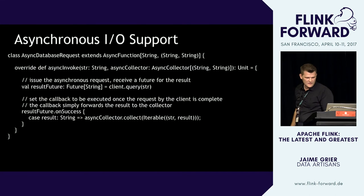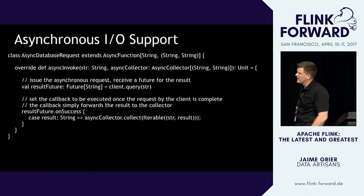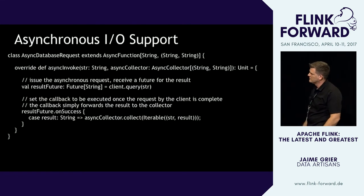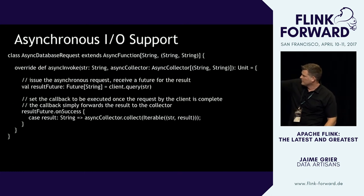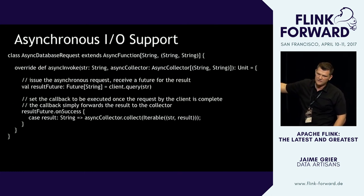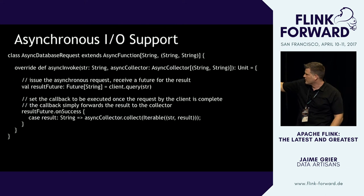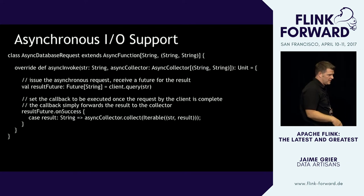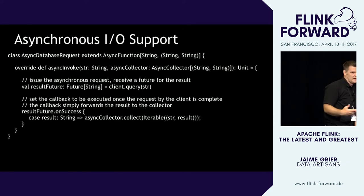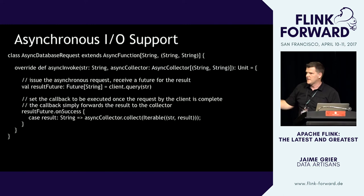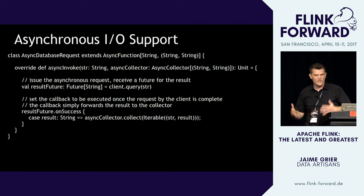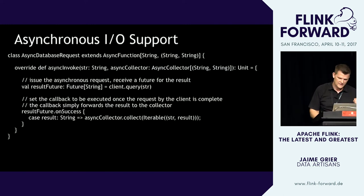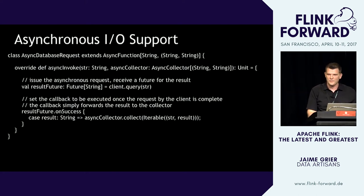Writing one of these async request functions is also really simple — you make the call to Cassandra or Redis, get a future back, wait on it, and use the familiar Flink collector interface just like a flat map function. All the complexity around fault tolerance is handled by Flink. It's super practical because talking to other systems comes up all the time.